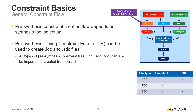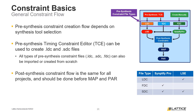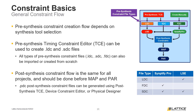The next step in the constraint creation flow is to create post-synthesis timing and physical constraints. At this point it doesn't matter what type of pre-synthesis constraint file was used, as post-synthesis constraints are only used for the map and place-and-route processes. Another useful feature of Radiant is that there are several ways PDC post-synthesis constraint files can be generated.